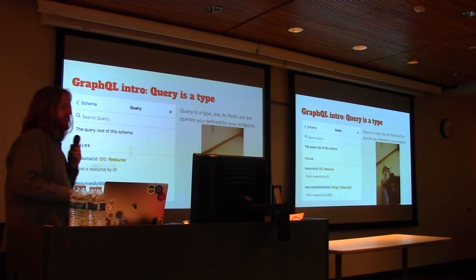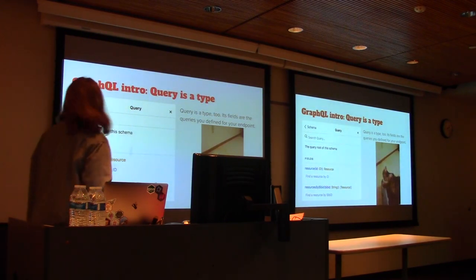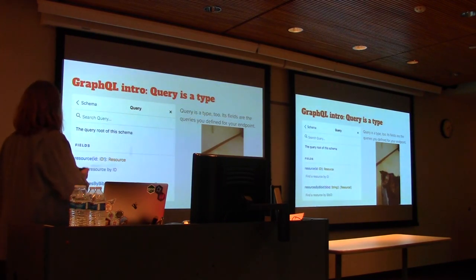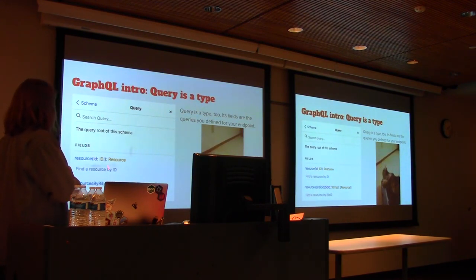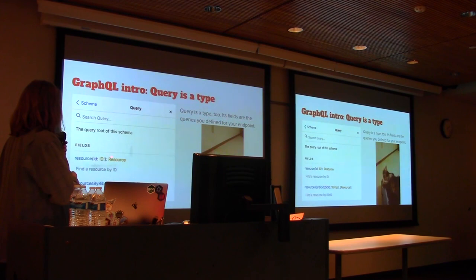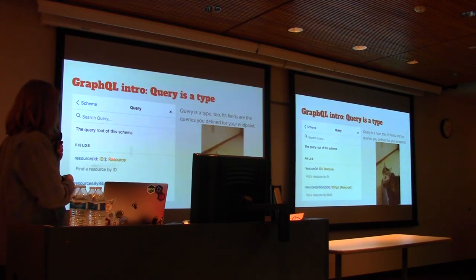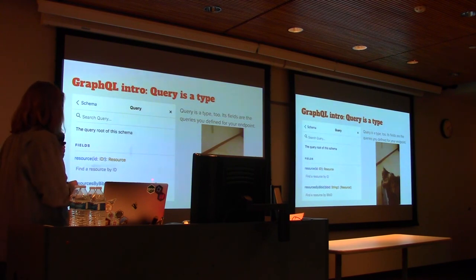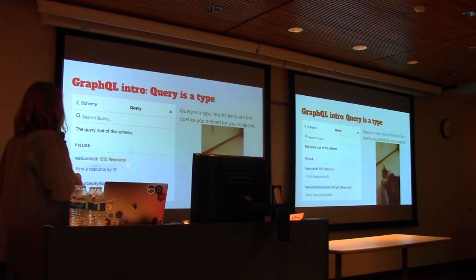Queries are also types — basically, everything in GraphQL is a type. You can see a couple of our queries; they look like fields, but the difference is they take arguments. So I can say, give me a resource by an ID, or give me resources by a div ID. It'll tell you what kind of thing to return — if I give it an ID I'll get one back, and if I give it a div ID I might have multiple things, so it returns an array.